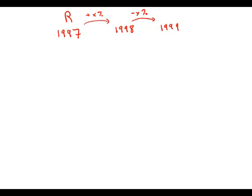So I'm going to use R for the value in 1997. This is a tricky problem because we have a percent increase and a percent decrease. Statement number one tells us that X is greater than Y, that the percent of increase was greater than the percent of decrease.